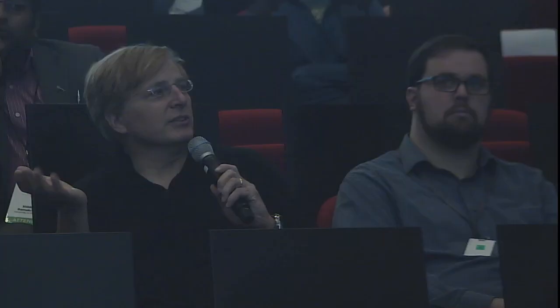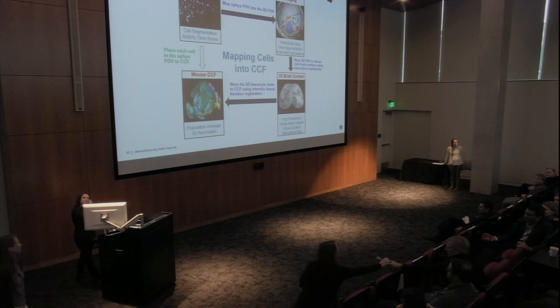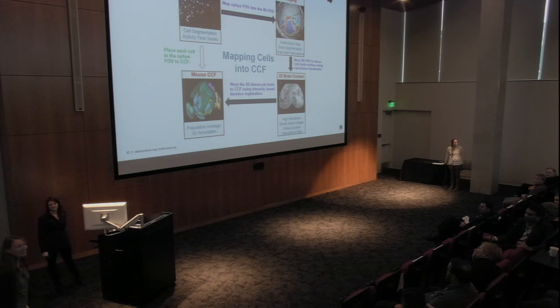A concern was raised about brain temperature: the head mount and cranial window may act as a heat sink on a small mouse's head, potentially affecting the temperature of the visual cortex. Temperature differences of even a few degrees could matter for neural activity. The response acknowledged this as an important consideration that the team has thought about and may want to examine in more depth — noting it would be straightforward to measure and determine if it's a problem. The session concluded with thanks to all speakers and attendees.